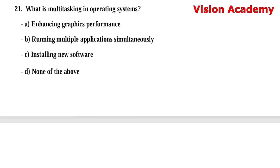Question number 21: What is multitasking in operating systems? Option A: enhancing graphics performance. Option B: running multiple applications simultaneously. Option C: installing new software. Option D: none of the above. The right answer is Option B, running multiple applications simultaneously.